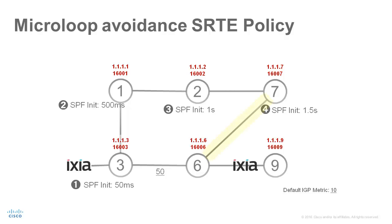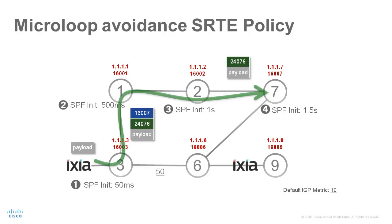After the link between node 6 and node 7 comes up, node 3 computes that a microloop on the new topology is possible. Instead of updating the forwarding table with the new forwarding entries, node 3 builds a loop-free SR-TE policy path to the destination using a list of segments. In this example, node 3 imposes the following segment list: first the prefix segment of node 7, which is 16007, and the adjacency segment from node 7 to node 6. From there, the packets go to their destination. This SR-TE policy carries the traffic on the post-convergence path to the destination without risk of a microloop.